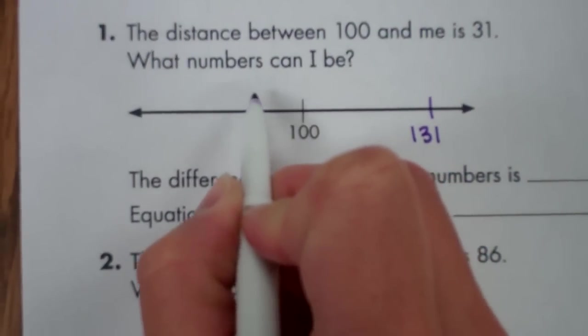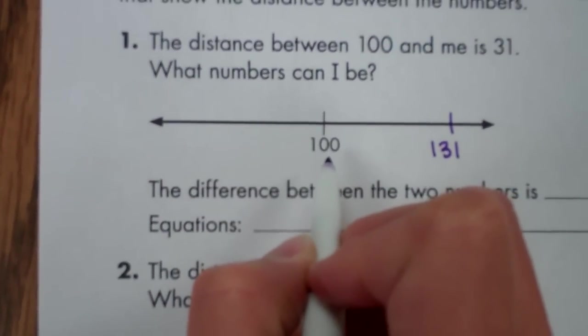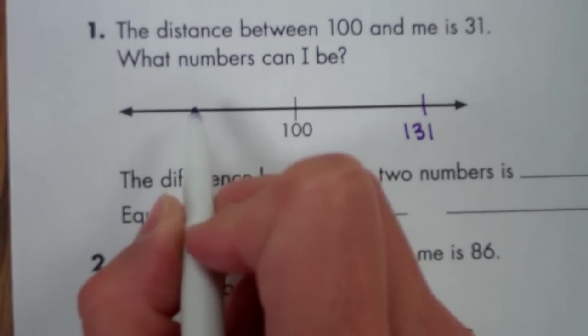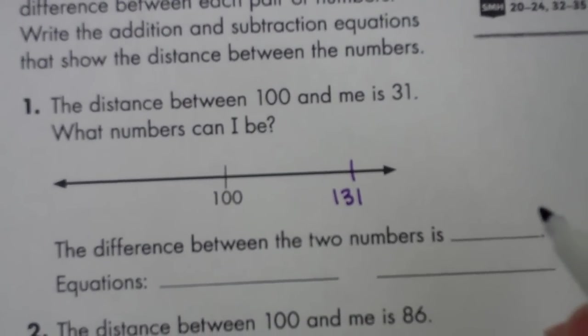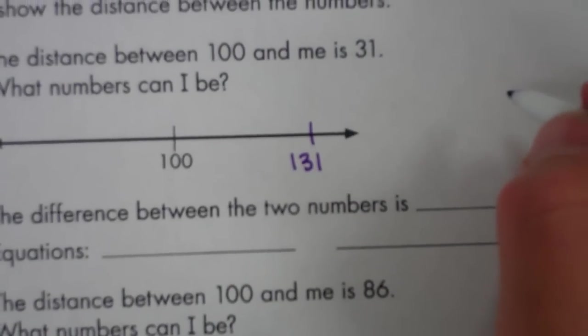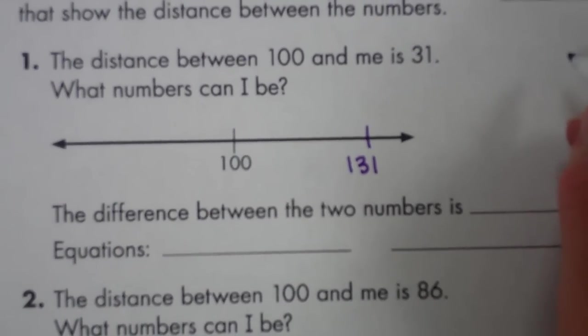But if you move 31 to the left from 100, you're actually subtracting on the number line. And I told the students if they weren't sure what the number was right off the top of their head, they could think of a hundreds chart to help them subtract.